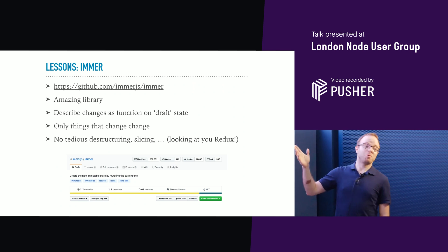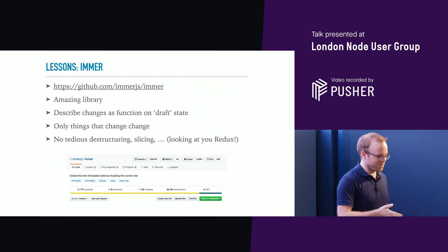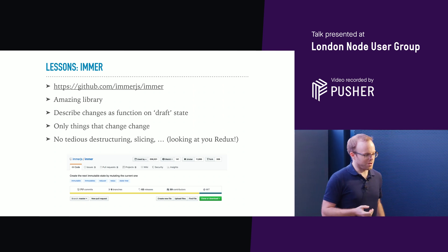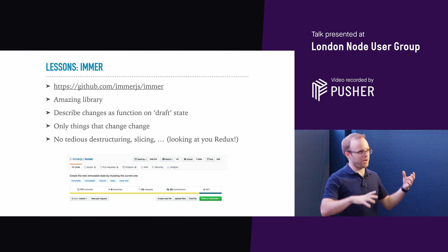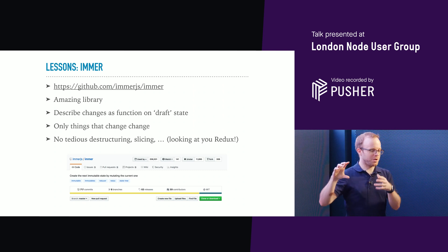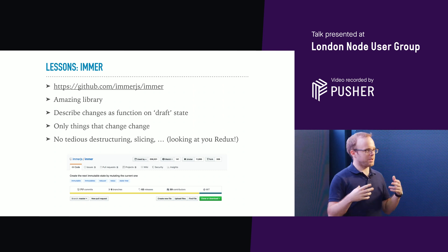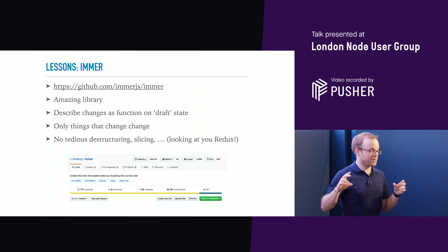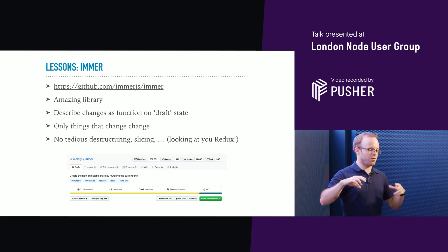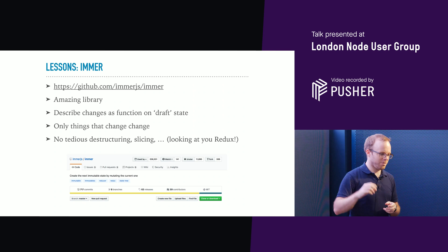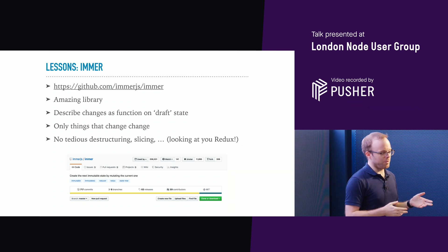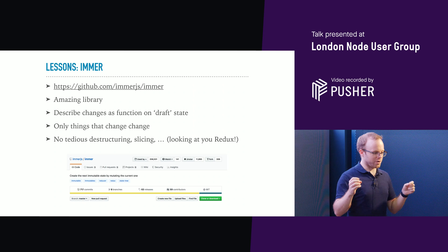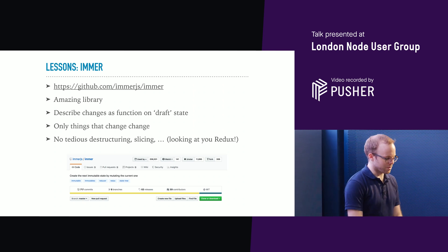The next lesson is: use Immer. It's amazing. It's the thing that does most of the hard work in what I presented. It's a library that takes an object and a function that updates a draft object. The clever thing with Immer is that it doesn't actually modify your original object. Through the magic of proxies, it creates a new object which shares all of the unmodified pieces of your old object with the new stuff. The main benefit is that compared to something like Redux, where you have to do various kinds of destructuring and indexing and slicing, you just do the natural idiomatic JavaScript stuff.